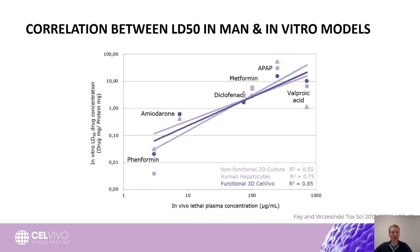All those changes lead to regaining liver-like functionality. We can actually see that an immortal hepatoma cell line grown in the right conditions can outperform not only the same cells grown as a monolayer, but also primary hepatocytes cultured in the traditional way. As shown on this graph, the functional spheroid population challenged with six different known drugs has a better correlation to the in vivo situation compared to 2D cultures of immortal cell lines as well as primary hepatocytes.